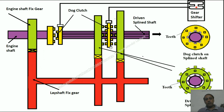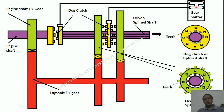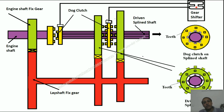These two gears are meshing with two driven gears — shown in green — and those two green driven gears are on a splined shaft. Ultimately, we want the power to reach the splined shaft, which is the driven shaft. In between there is a dog clutch, and by shifting this dog clutch right and left we can transfer the power of any gear to the splined shaft.